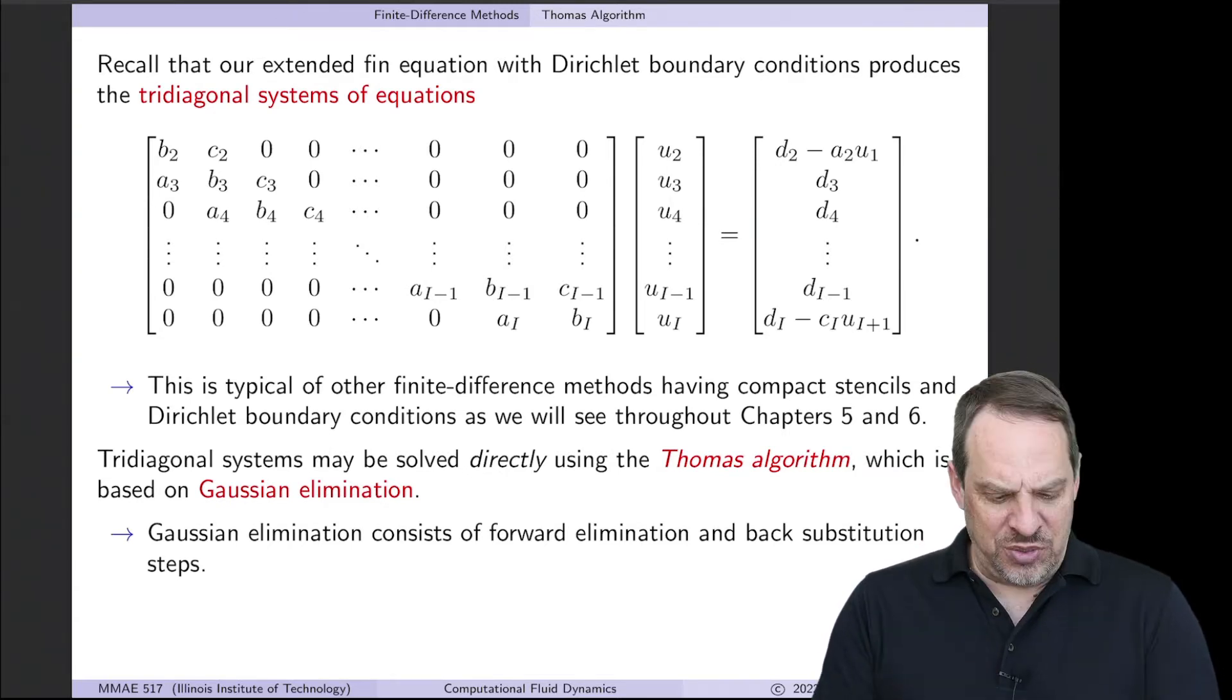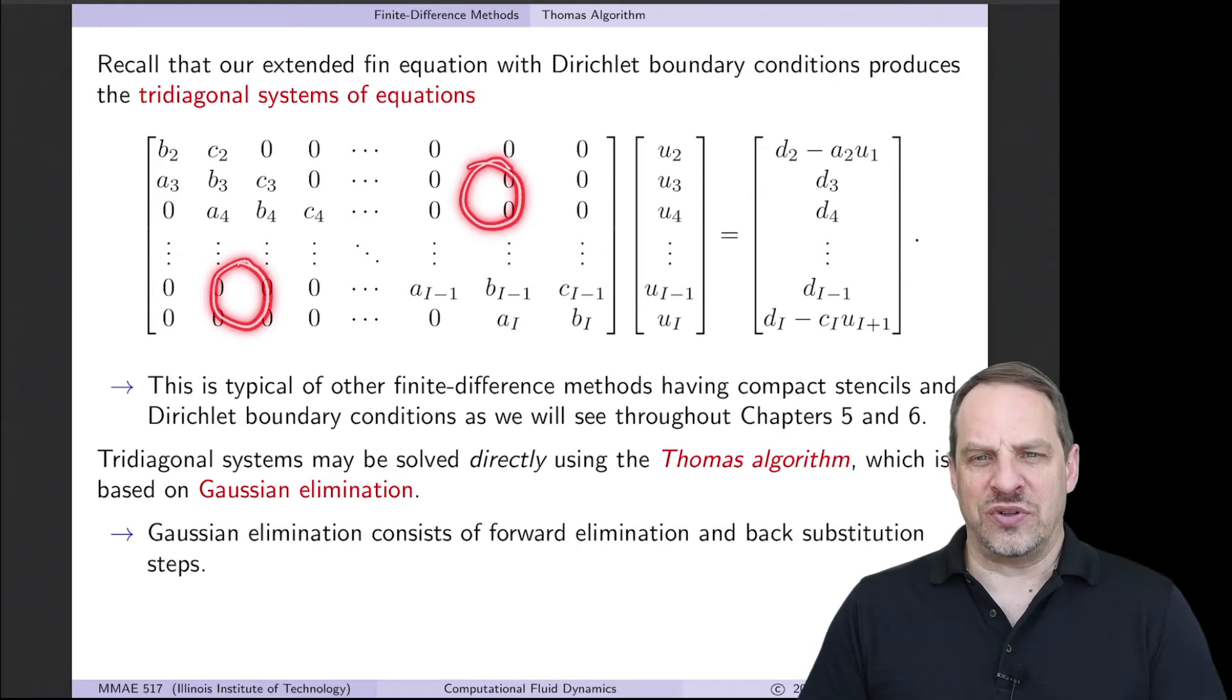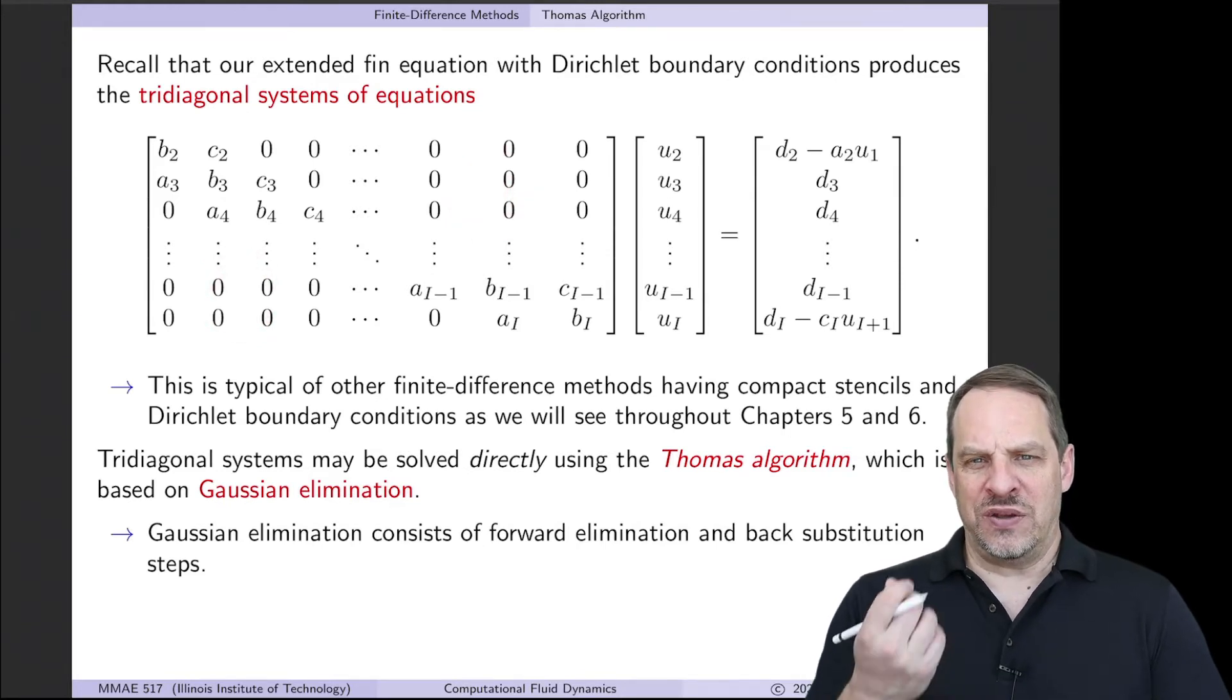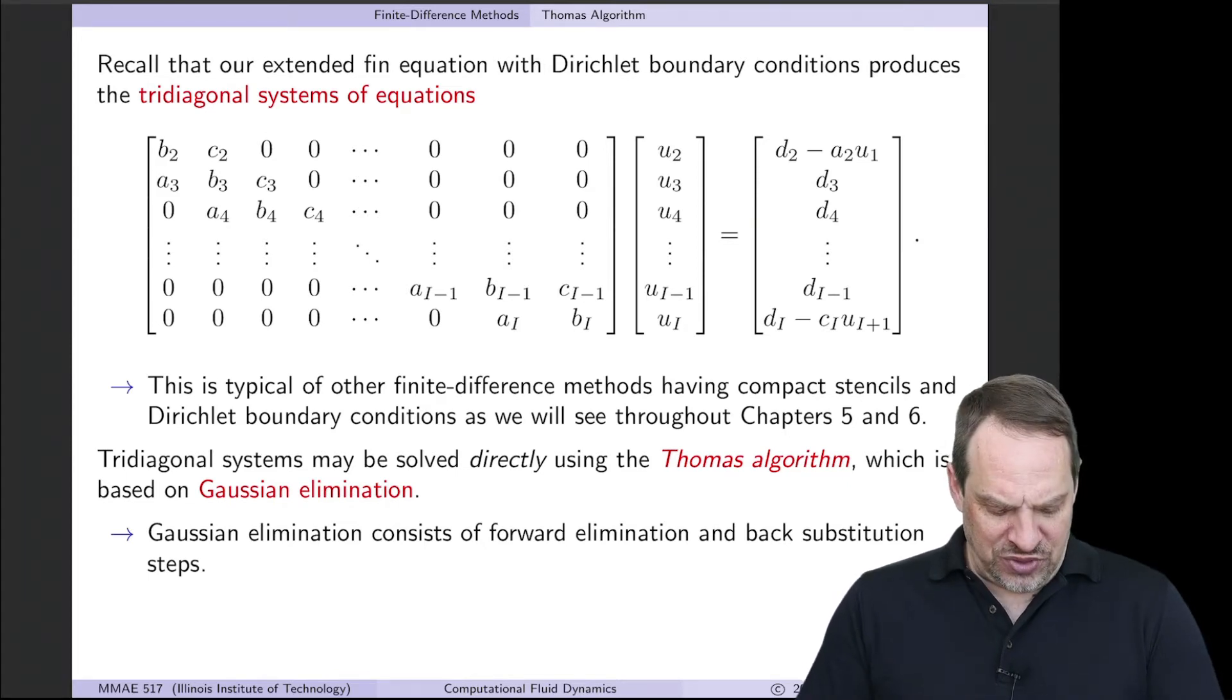The reason why we're using it here is because we have a relatively simple matrix problem to solve. Most of the values in our matrix are zeros. So many of the Gauss elimination steps that we would normally do for a full dense matrix don't need to be done.